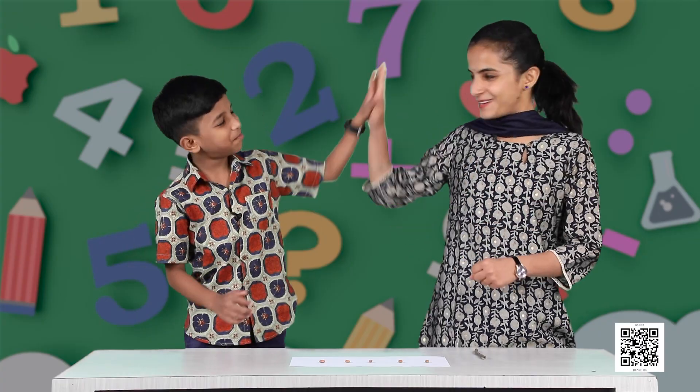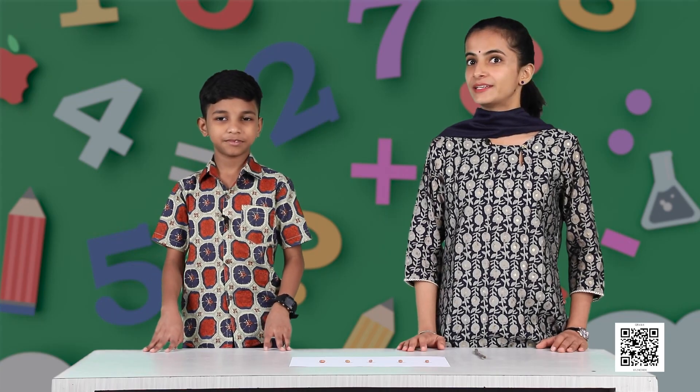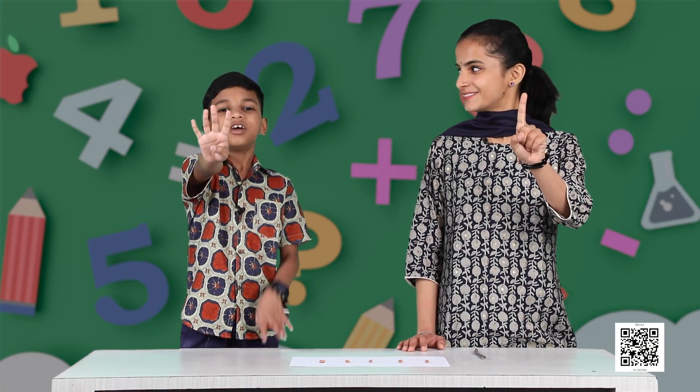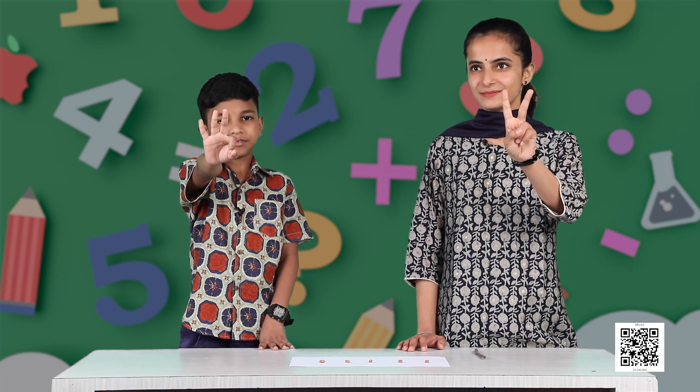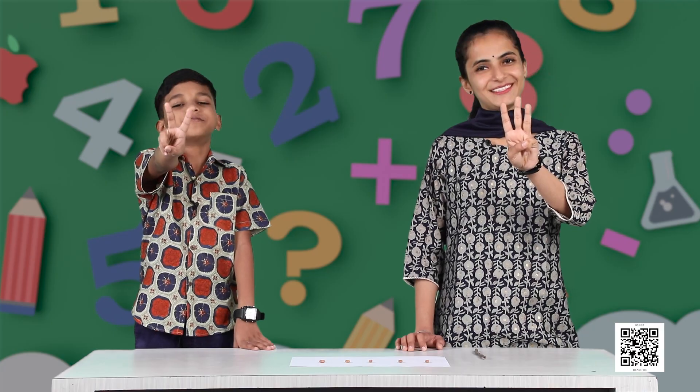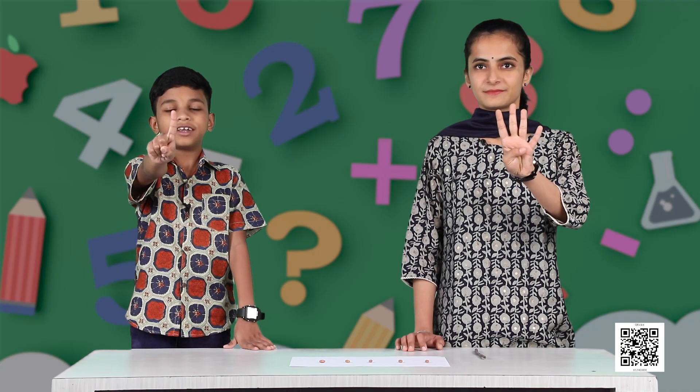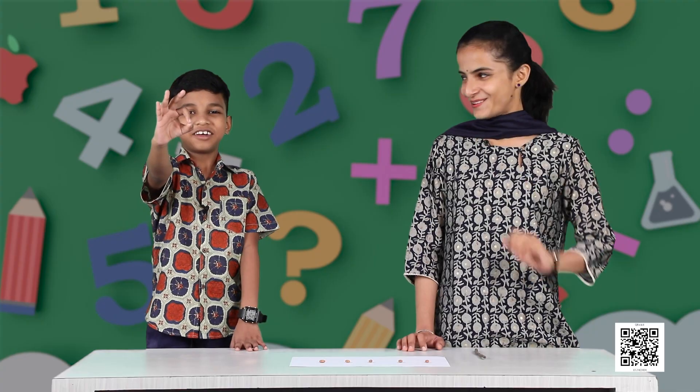Dear friends, let's play a game with the handy numbers. First we will talk about the number five. I will show you some fingers, Arnav, and you have to show me the remaining fingers to make five. First I show you one finger — four more to make five. Now two fingers — three more. Now three fingers — two more. Now four fingers — one more to make five. Now five fingers — zero! I tried to puzzle you but you answered very smartly. Very nice, Arnav.